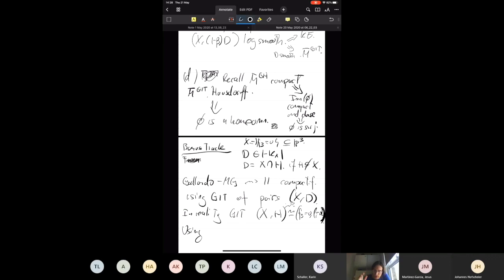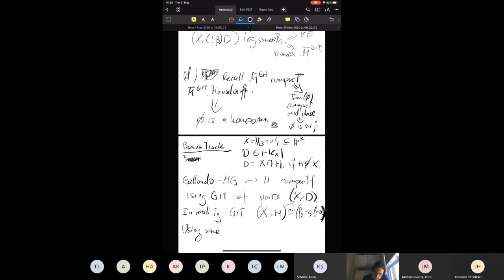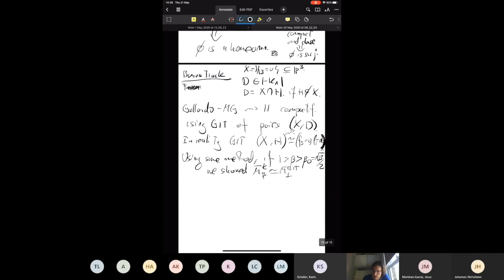Using the same method, once we have those 11 compactifications, we showed if beta was bigger than beta_0 and smaller than 1, we showed that M_K beta was isomorphic to M_GIT for the first compactification of those 11. This is also with Spotti. In that case, part one of the method—well, part 0 obviously was hard because we had to come up with the right compactification and that wasn't easy to figure out.